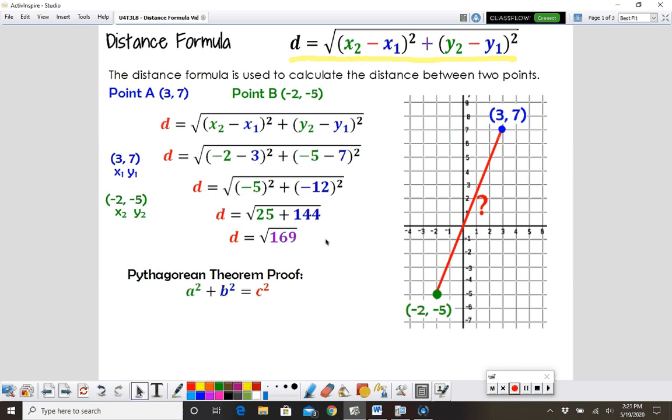Then our last step is to take this square root. Now, the square root of 169 is either positive or negative 13. I only listed our positive value here because we're talking about a distance, and distance can't be negative. So the length of this line is 13 units.